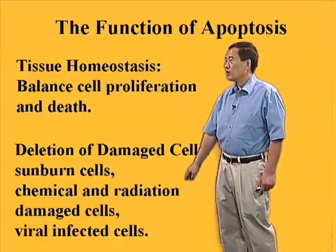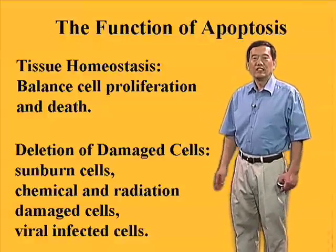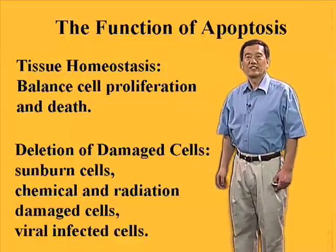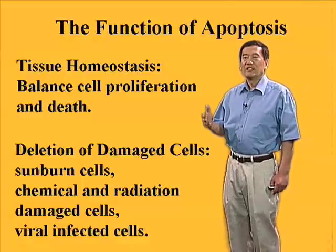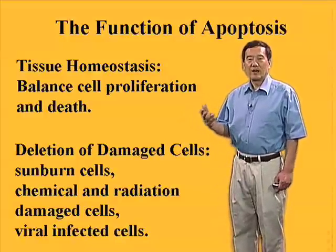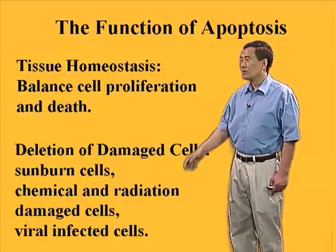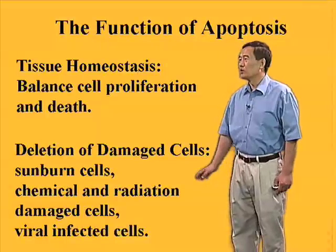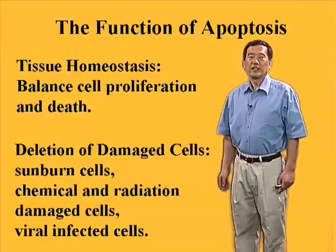Also, apoptosis plays a critical role in eliminating damaged cells in our body. For example, the sunburn cells — when we walk outdoors under the Texas sun for five minutes in the summertime, we will get sunburns. That's because the cells in our skin will respond to the damage caused by UV light, activate their apoptotic program and die, and that's how we get sunburns. Chemical, radiation, and virus-damaged cells also need to be eliminated by apoptosis.